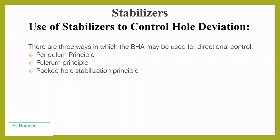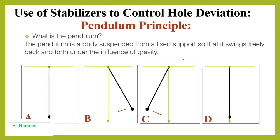In the previous episode we talked about the ways in which the BHA may be used for directional control, and we named these ways as the pendulum principle, fulcrum principle, and packed hole stabilization principle. Today we will start with the pendulum principle.